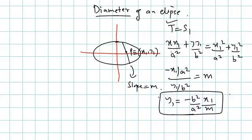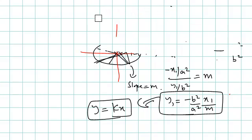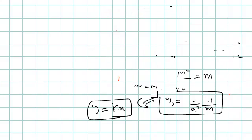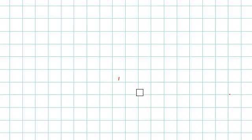So the locus is y₁ = (−b²/a²) · (x₁/m), which gives us the equation of the diameter as y = kx. This is a line passing through the center of the ellipse. All lines passing through the center are diameters of the ellipse. Now quickly, the diameter of a circle is a line passing through the center — you have been familiar with this for many years.